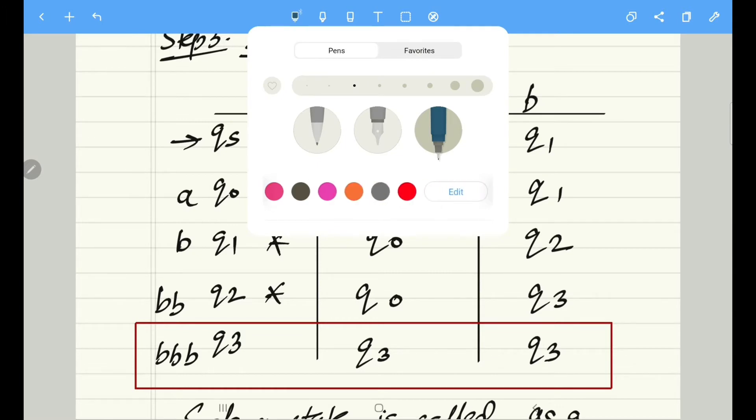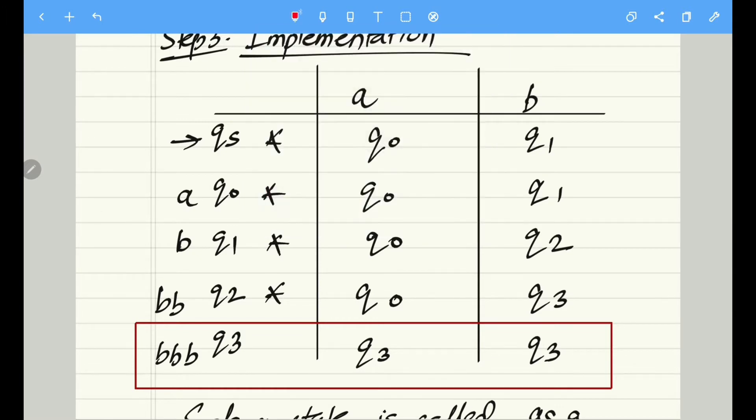So in this question, qs, q0, q1, as well as q2, these are the four states which are my final states. But as soon as the input becomes three consecutive b's, that becomes a non-final state. Is it clear now?